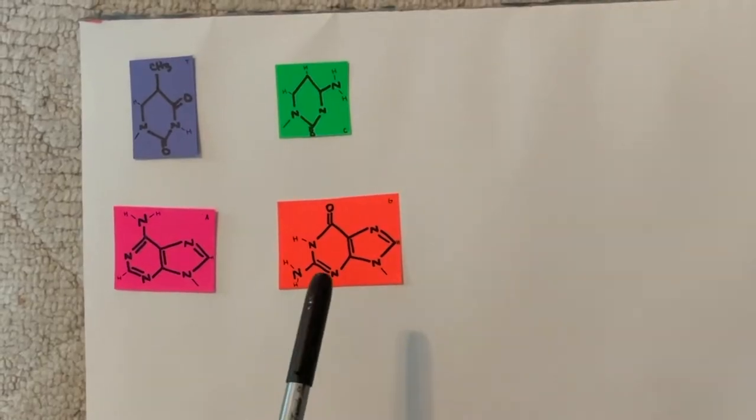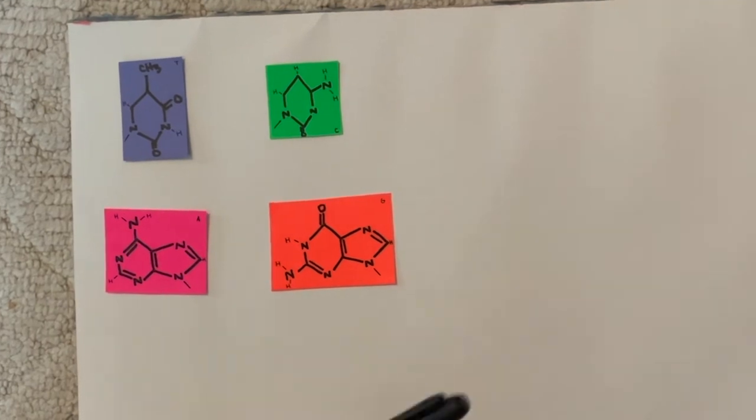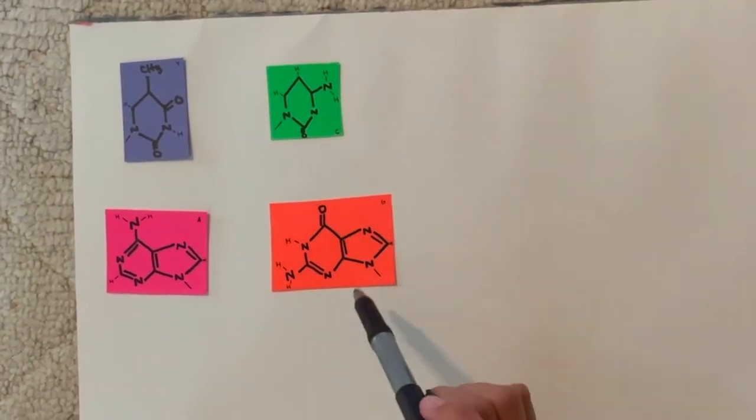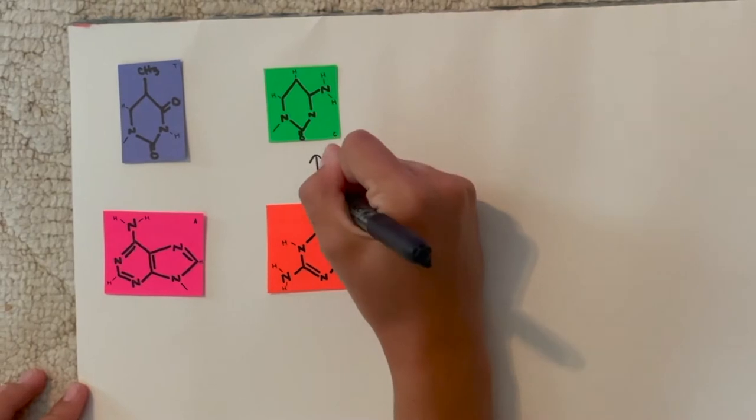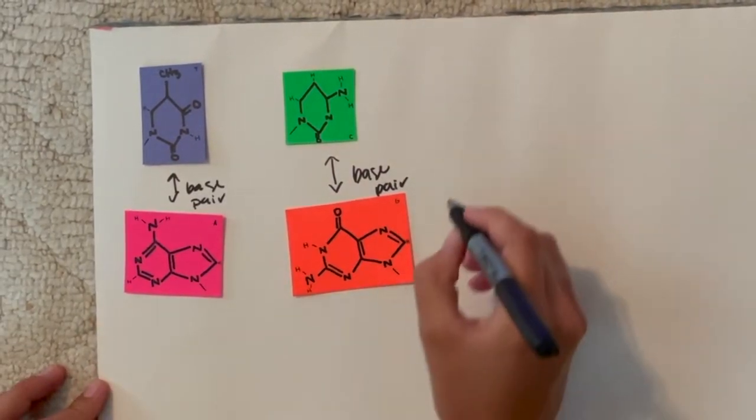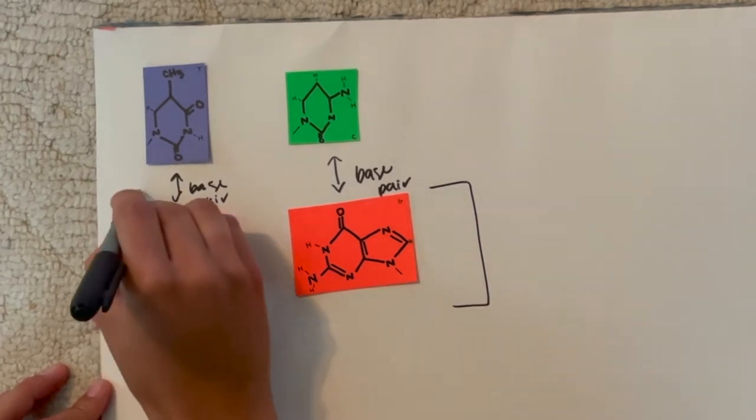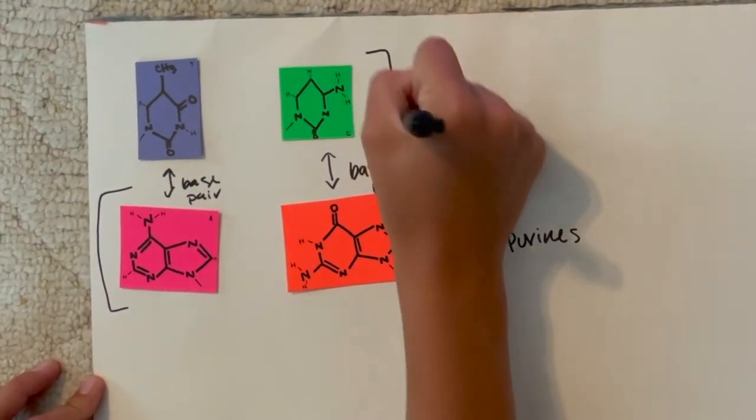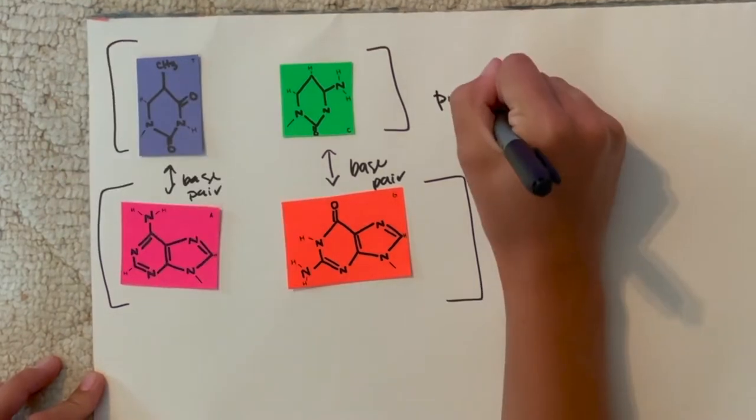So these are the four components of nucleic acids in DNA. Thymine is adenine, cytosine is guanine, and these two base pair and these two base pair. And then these two are purines and these two pyrimidines.